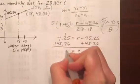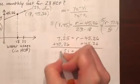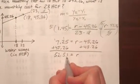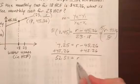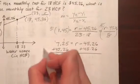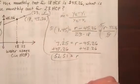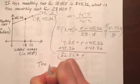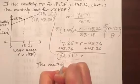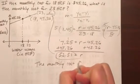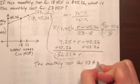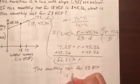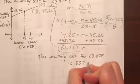So that would be $52.51. And so you can see that that's what goes in this spot in our second ordered pair. And so the monthly cost for 23 hundreds of cubic feet of water is $52.51.